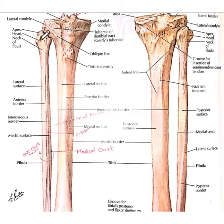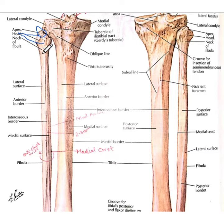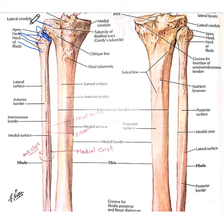Its upper end consists of a styloid process with its apex directed posterolaterally. Just below this styloid process, this expanded part is known as the head. A constricted part below this head is known as the neck of the fibula. Its upper end also consists of an articulating facet for articulation with the lateral condyle of the tibia bone.